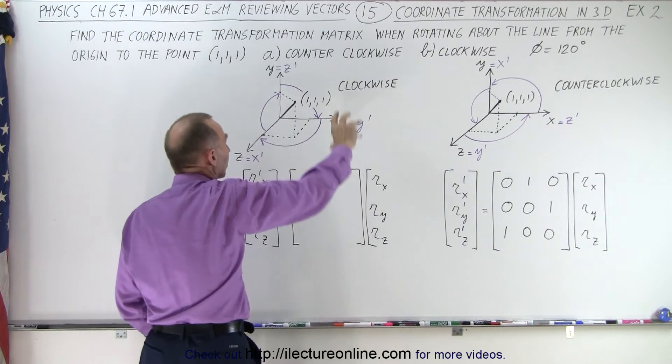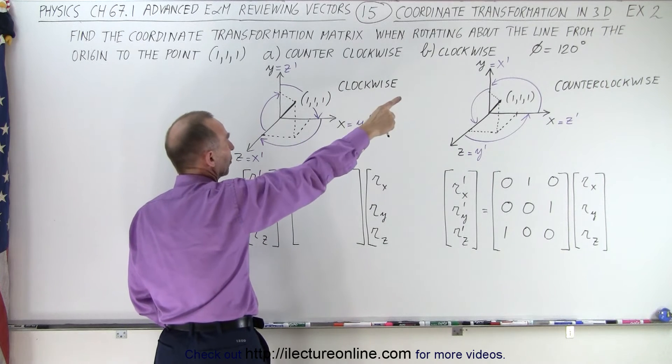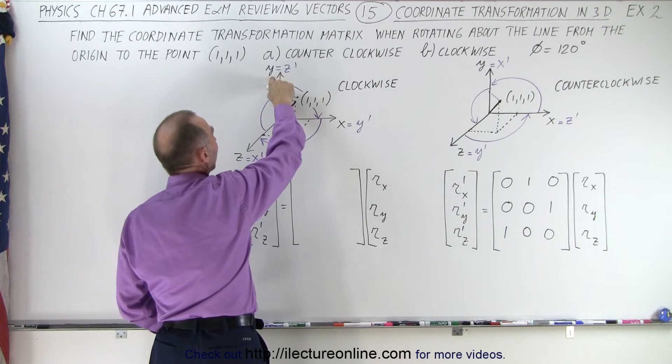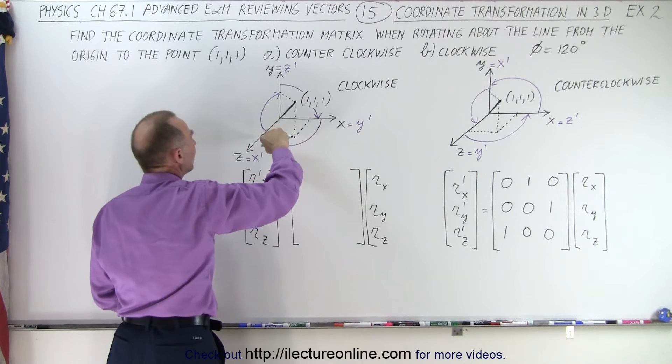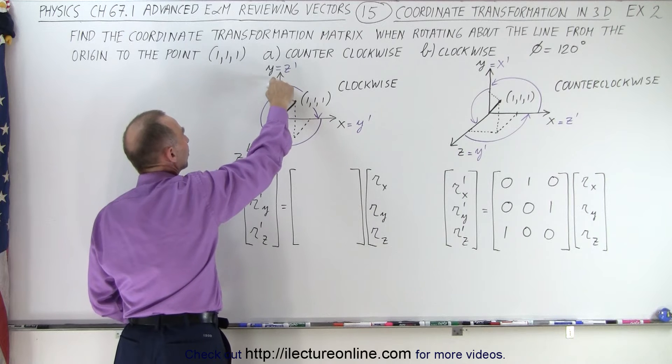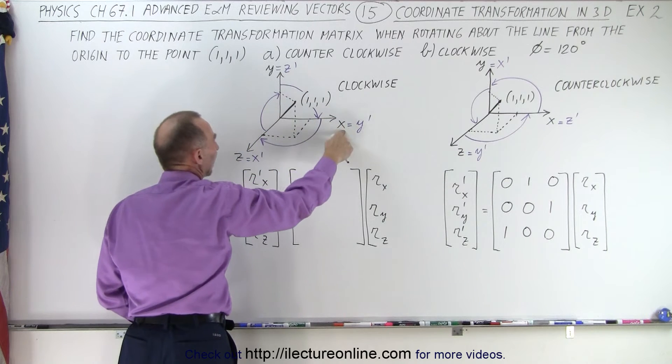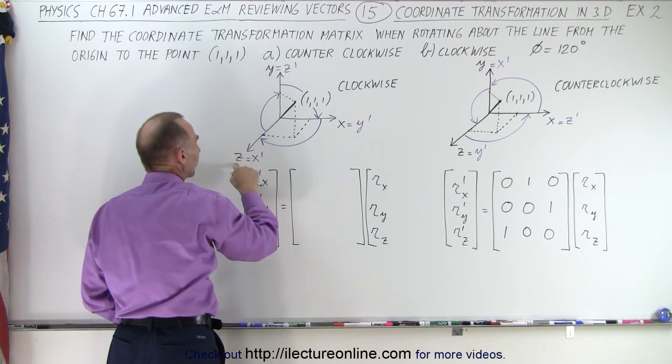If I now want to rotate everything in a clockwise direction by 120 degrees, then the Y axis will now come over here. So the Y prime will now equal X. The Z axis will rotate over here. So Y will be Z prime. And the X axis will rotate over here. So Z will be X prime.